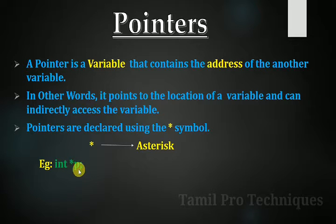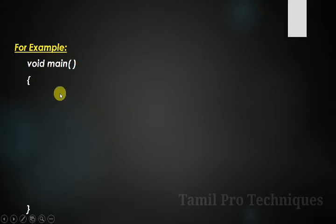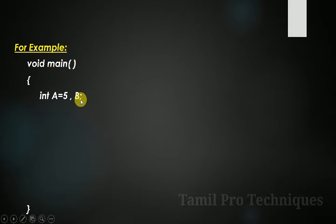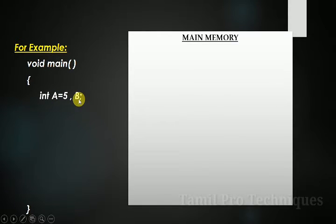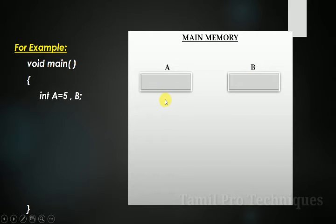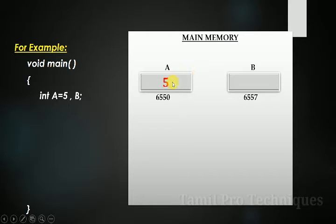First, we use the pointer variable in a program. We have a void main. We declare two variables with the names A and B. Then we declare a pointer variable.